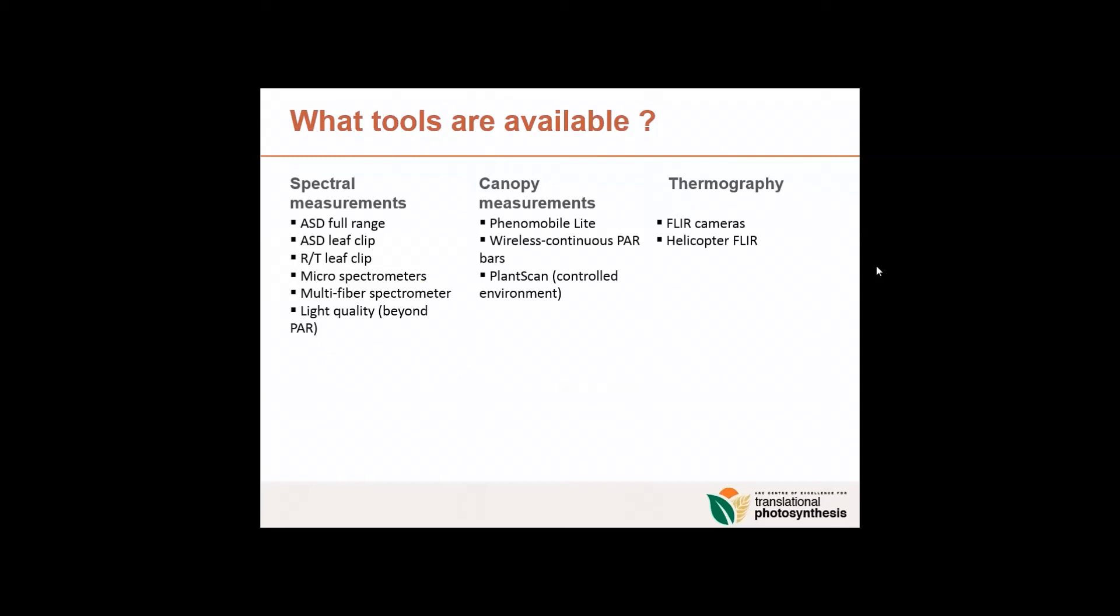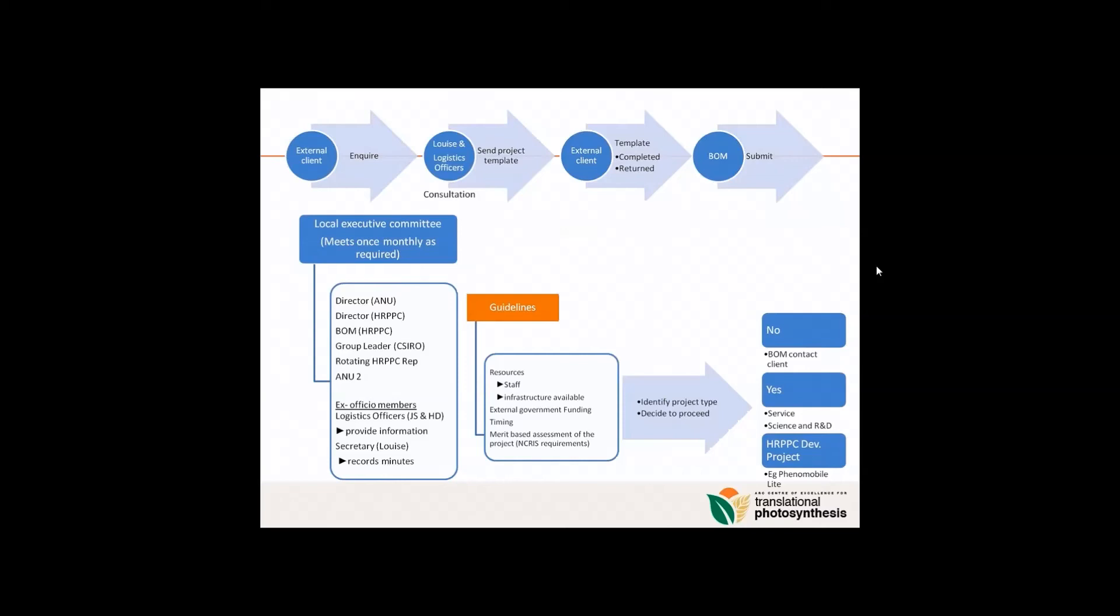We have different spectral measurement devices like this leaf clip, which is called Ocean Optics leaf clip and measures reflectance and transmittance. We have the ESD that Viridiana has used. The main difference is that it allows you to measure in a broader range, so you can determine things beyond pigments that you can pick up here. We also have light spectrometers or multiple fiber spectrometers for measuring the light quality and distribution of light within canopies, beyond just power measurements, which is a really broad measurement of light. Then we have a number of instruments for measuring canopy traits like canopy architecture, biomass, even light interception continuously.